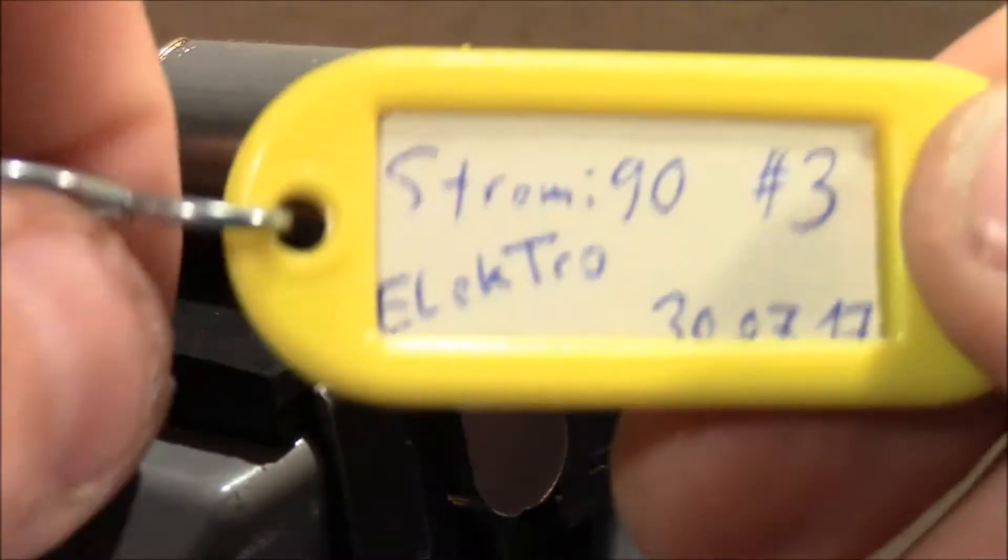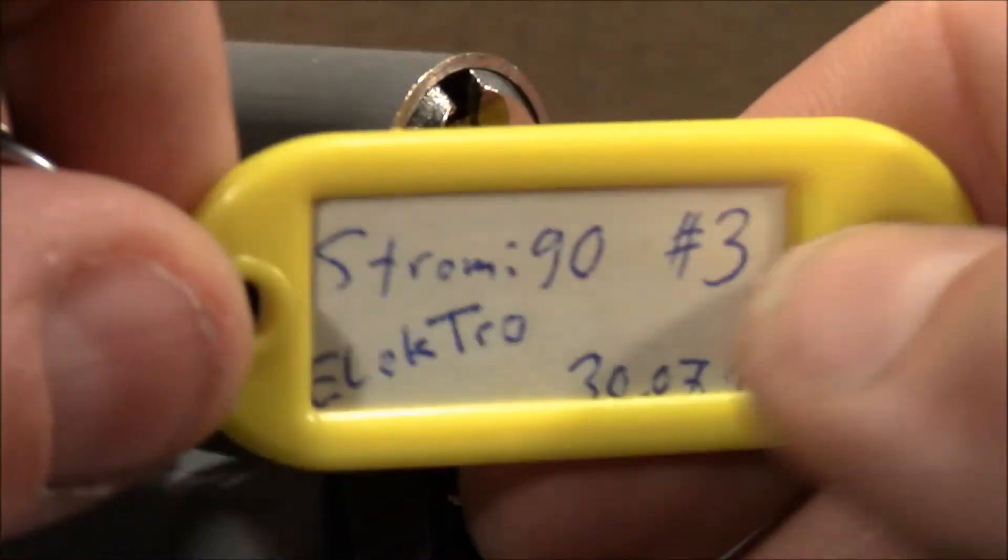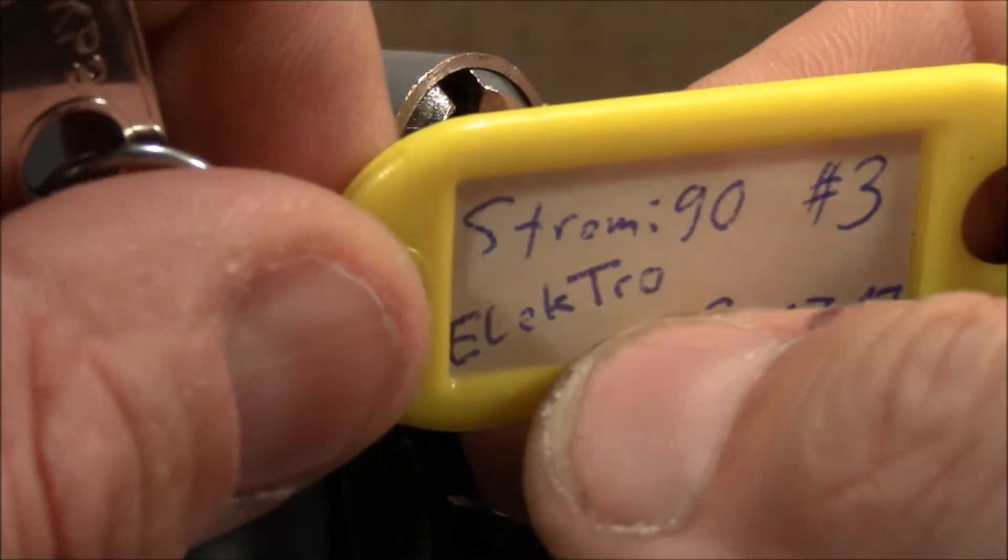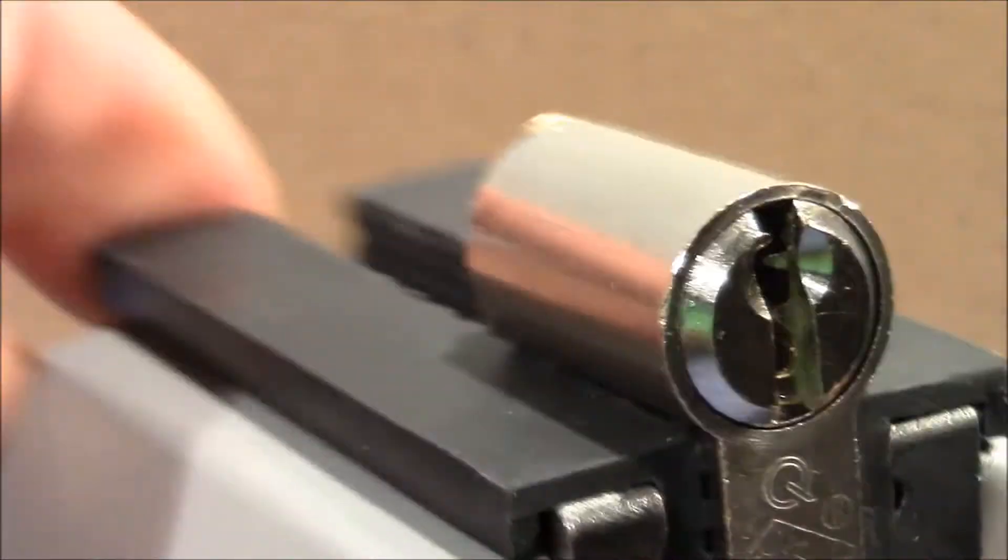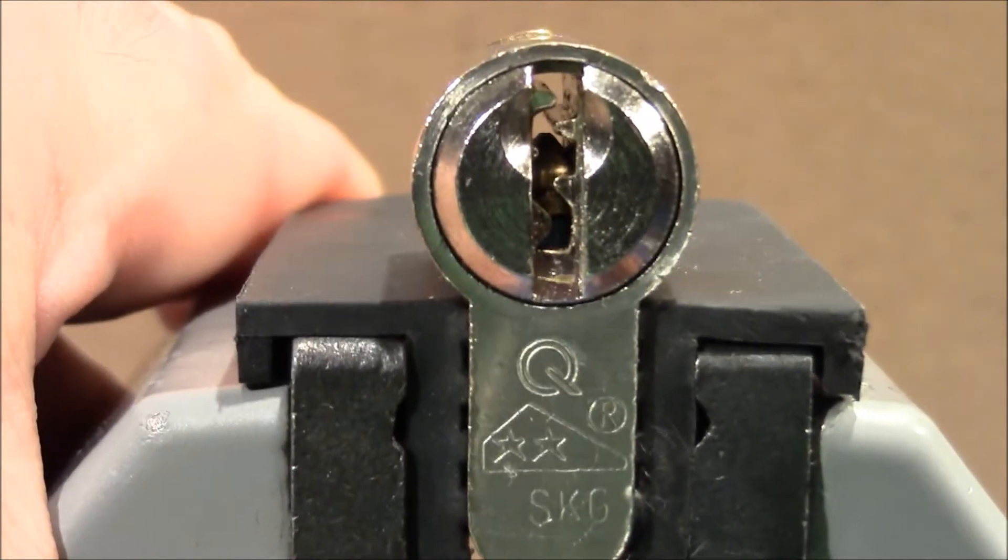Welcome to a challenge lock made by Strobe90. It's his third challenge lock and he named it Electro, built at the end of July 2017. Key still mummied. That's how the keyway looks like, pretty wide open.